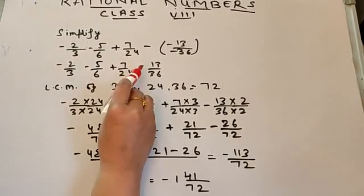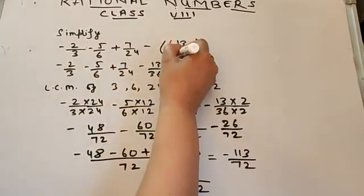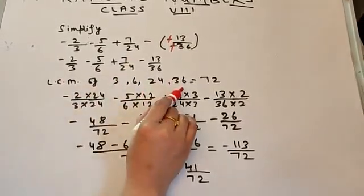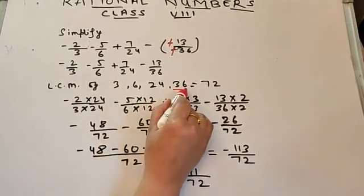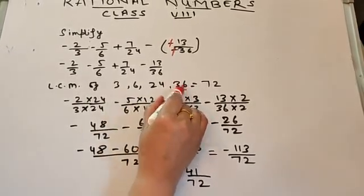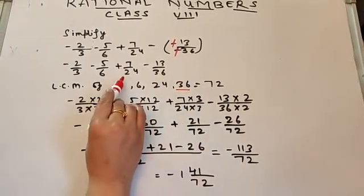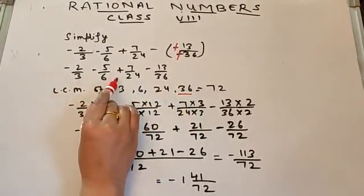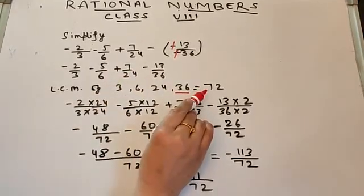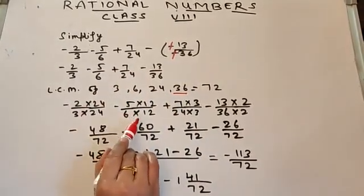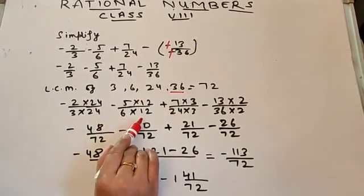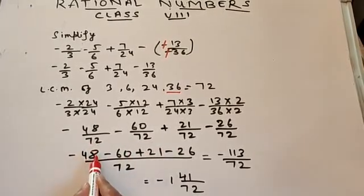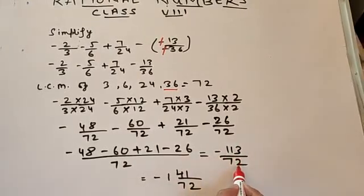Let's simplify this question. The first step is to cancel the negative sign and rewrite the question. The next step is to find the LCM of the denominators. We take the table of the higher number, 36: 36 ones are 36, which comes in the table of 3 but not in the table of 24. 36 twos are 72, which comes in the table of 3, 6, as well as in the table of 24. So 72 is the LCM. We convert into equivalent rational numbers with denominator 72. Once the denominators are the same, we solve the numerators, and the answer is minus 113 upon 72.